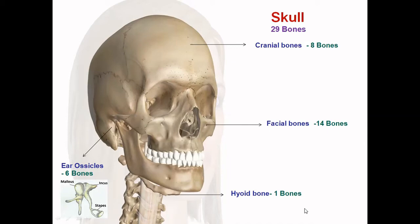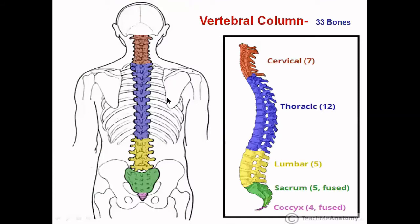Now let's learn the next part of the axial skeleton: the vertebral column. The vertebral column is present in the mid-dorsal region of the neck and trunk. It consists of 33 vertebrae, which on the basis of their location are divided into five main groups.